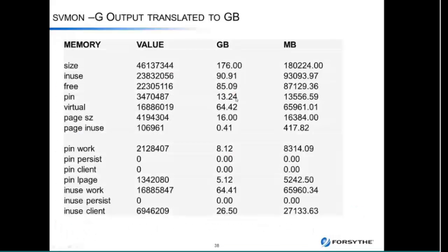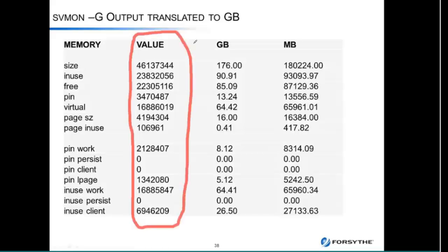The other thing I tend to look at is the output of SVMON, because I'm trying to figure out the breakdown of memory. When you look at SVMON, it reports everything in pages. I personally don't think in pages — I think in gigabytes — so I stick these into a spreadsheet. The numbers I'm looking at are: 176 gig of memory, of which 91 gigs is in use, and 13 gig is pinned.